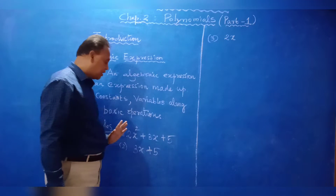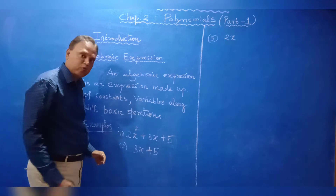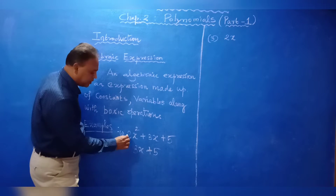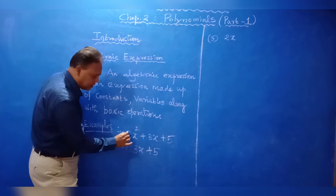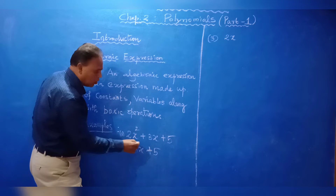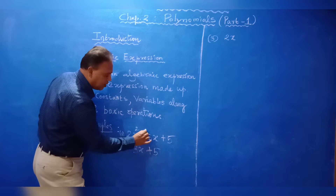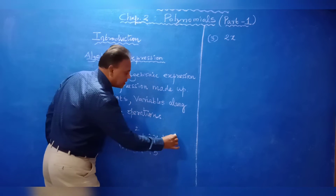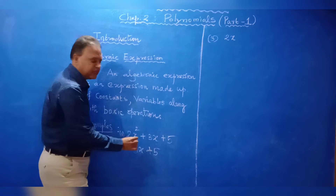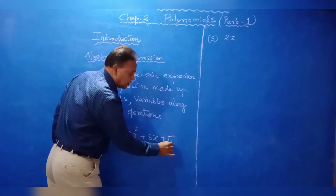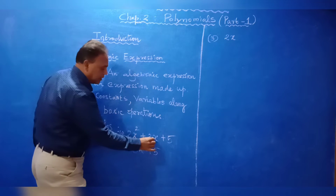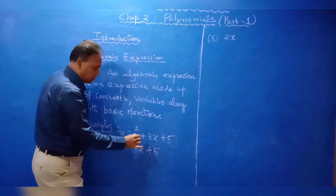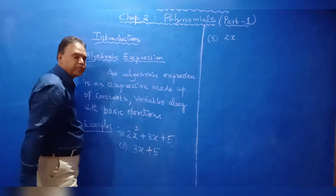You also learned about coefficients. The coefficient of X squared is 2, the coefficient of X is plus 3, and the last term 5 is the constant term — there is no variable in that term. In the expression 3X plus 5, the coefficient of X is 3.